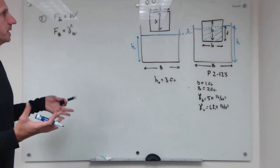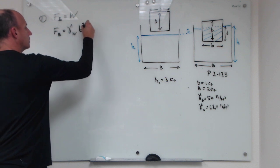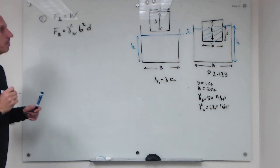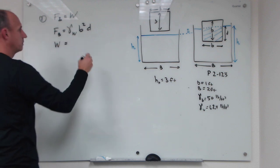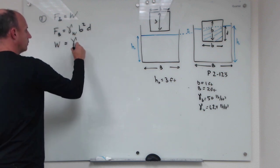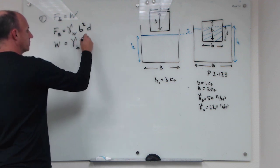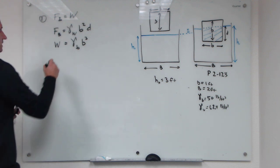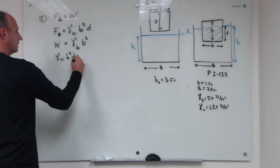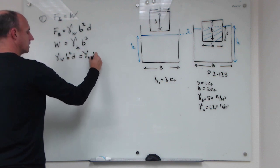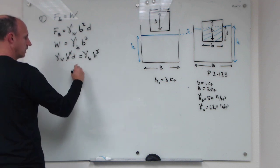That's going to be equal to B squared times D. And then when we look at the weight of the block, it's going to be equal to the unit weight of the block, we'll call gamma B, times the volume of the block which is B to the third. So if we set these things together, we get gamma W B squared D is equal to gamma B times B to the third, so those guys cancel and we can conclude that...